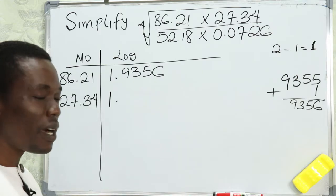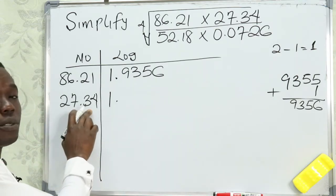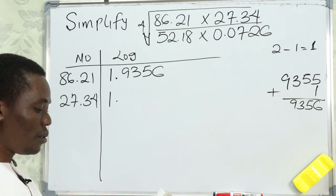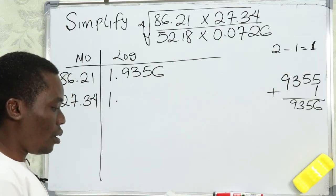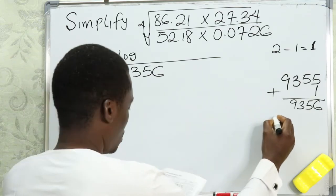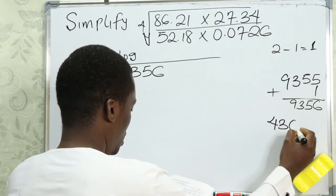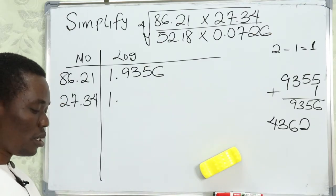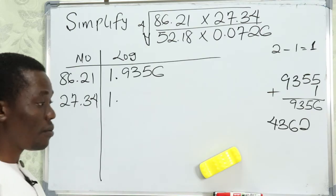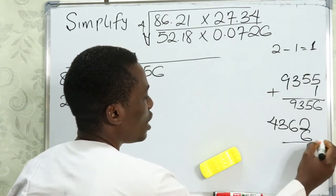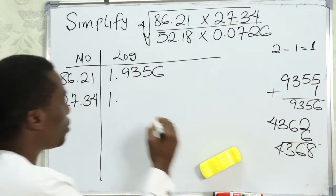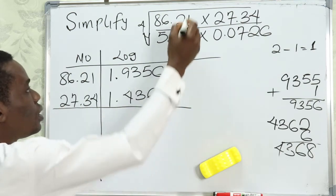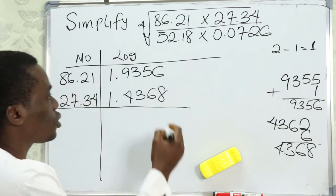The next number: the characteristic still remains 1. We find the log of 27 under column 3, with a difference of 4. The log of 27 under 3 gives us 4362, and difference 4 gives us 6, so adding 6 gives us 4368. So we have 1.4368 for the second number in the numerator.